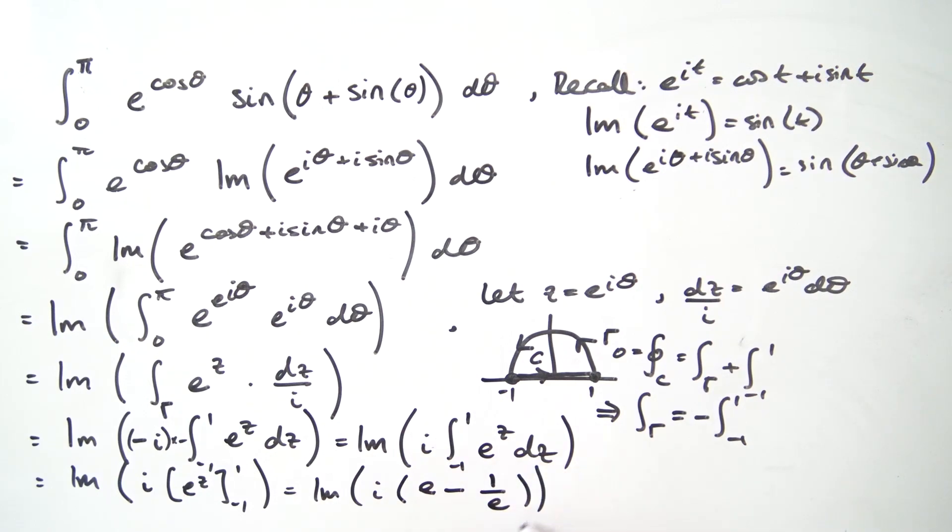We can write this as 1 over e, and since this guy in here is purely imaginary, the imaginary part of that is very quite simple: it's just going to become e minus 1 over e, and that is the final result for this integral.